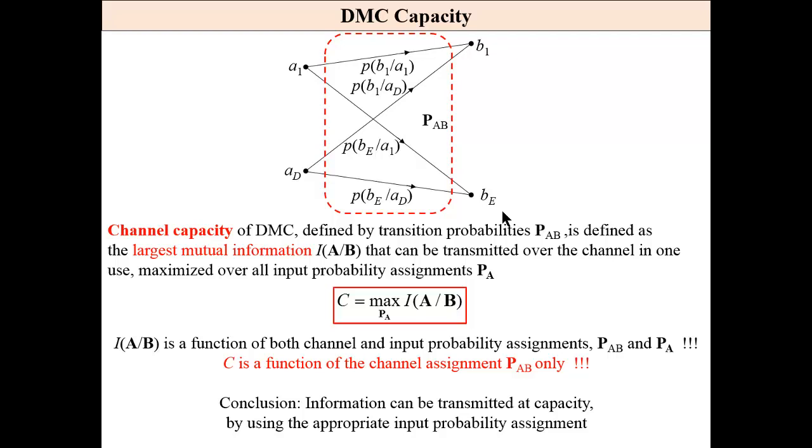Now, let me define channel capacity. Channel capacity is defined by only transition probabilities. It is the largest mutual information that can be transmitted over the channel in one use, maximized over all input probability assignments. Let me repeat. Capacity is designated only by channel probabilities and input probabilities.